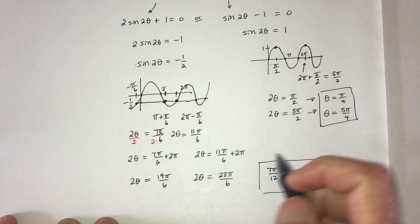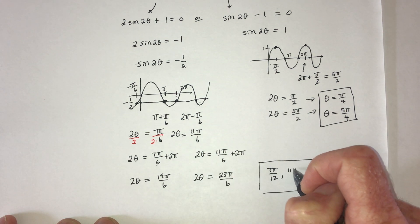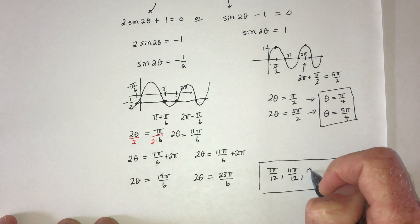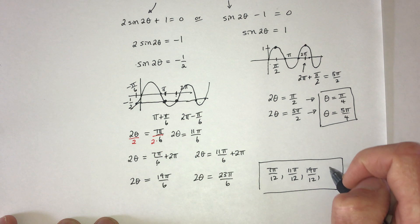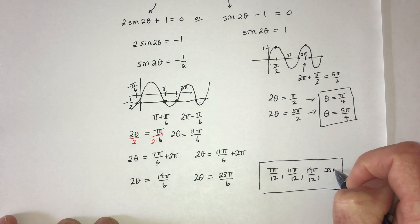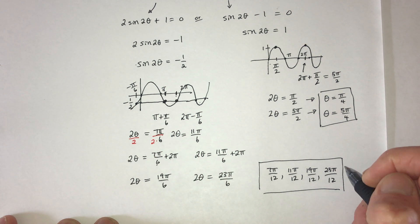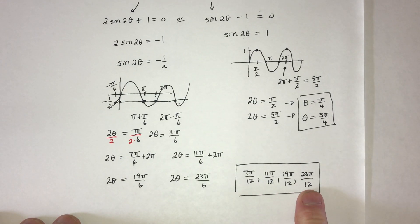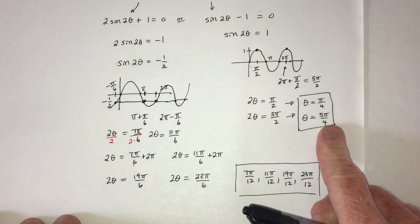This would be 11 pi over 12. This one would become 19 pi over 12. And this one would become 23 pi over 12. So in total, there's 4, 5, 6 solutions.